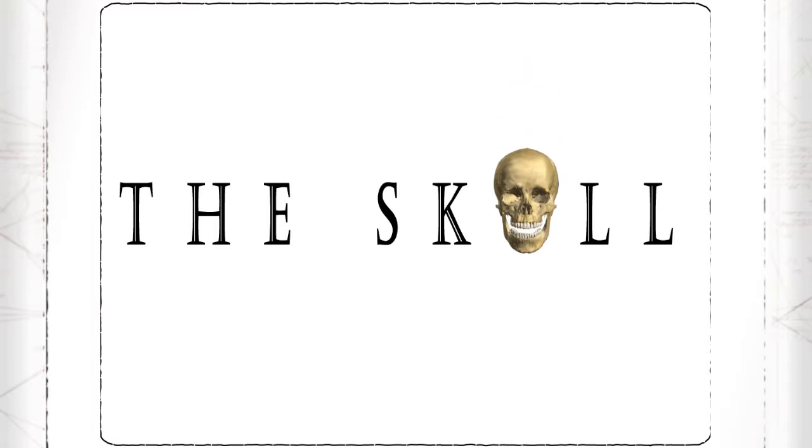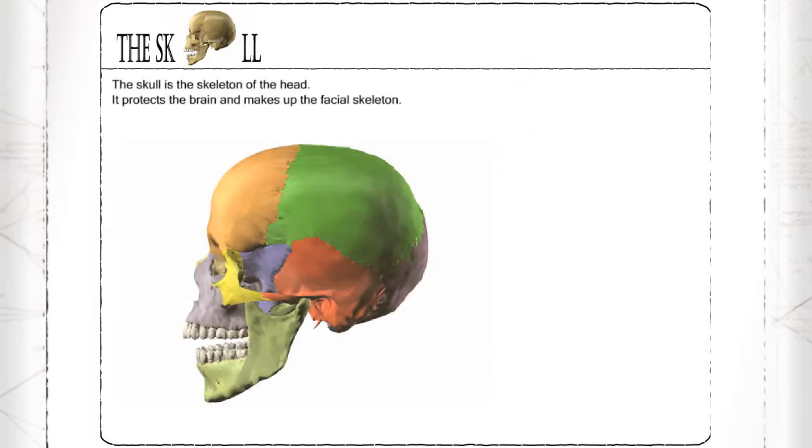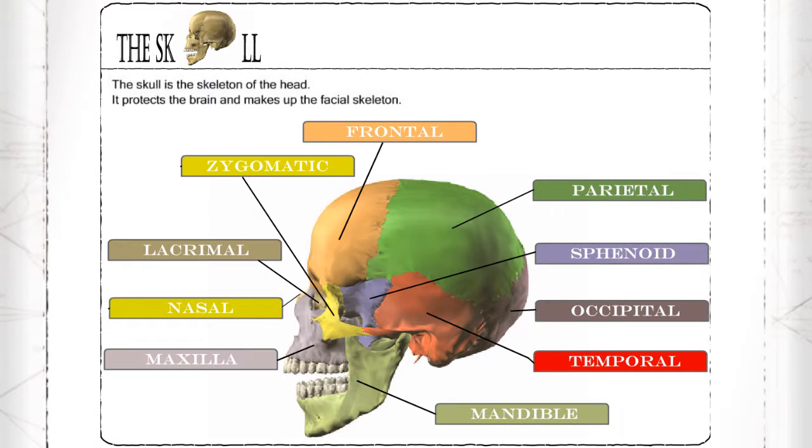The skull, or cranium, is the skeleton of the head. It protects the brain and makes up the facial skeleton. The skull is made up of 10 major bones: frontal, zygomatic, lacrimal, nasal, maxilla, mandible, temporal, occipital, sphenoid, and parietal.